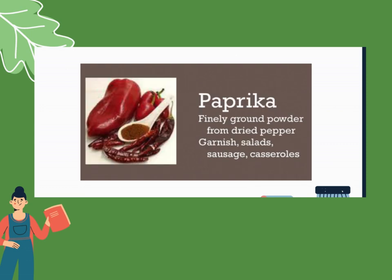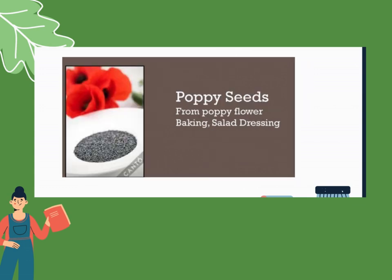Next, paprika — a finely ground powder from dried pepper. You can use this for garnish, salad, sausage, and for foods prepared as casseroles. Next, poppy seed — from the poppy flower. Used commonly for baking and salad dressing.